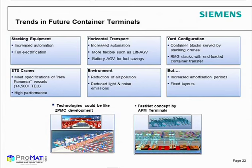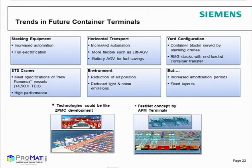Siemens is also looking at new container handling equipment. At APM terminals, concepts like FastNet are emerging. Siemens is thinking about crane grid concepts — a grid where cranes move automatically. Terminals are investing more in stacking equipment and horizontal transport, with the aim to reduce pollution and use more electric drive or battery-driven technologies.